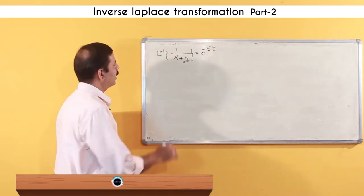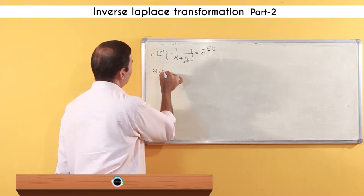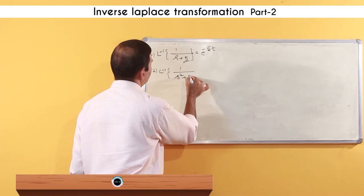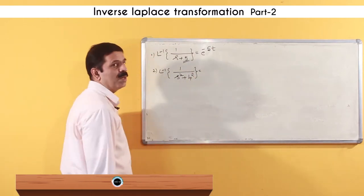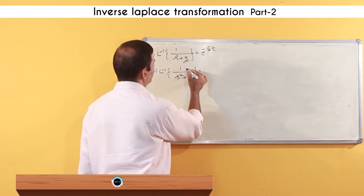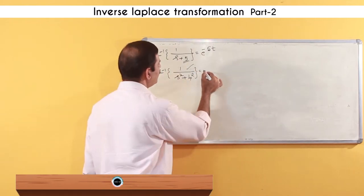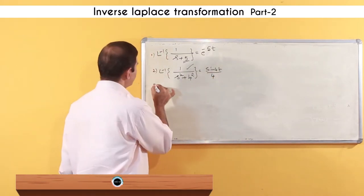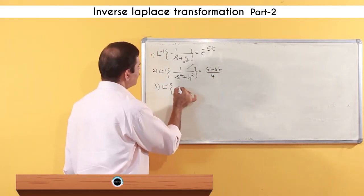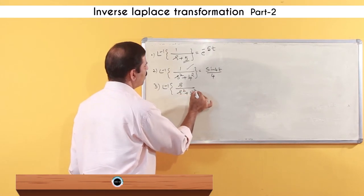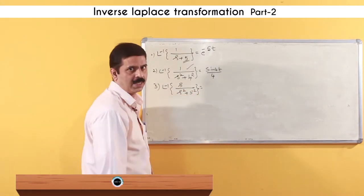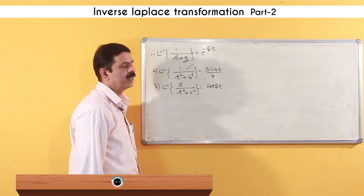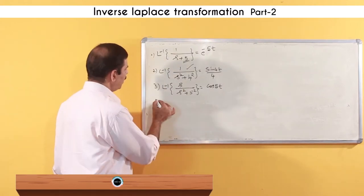Similarly, the Laplace inverse of 1/(s² + 4²) corresponds to sin(4t)/4. And if the given function is the Laplace inverse of s/(s² + 5²), then the corresponding formula gives cos(5t). So likewise you can find these results.